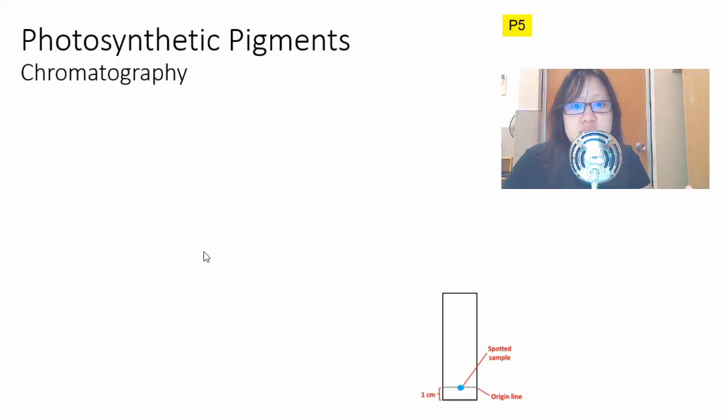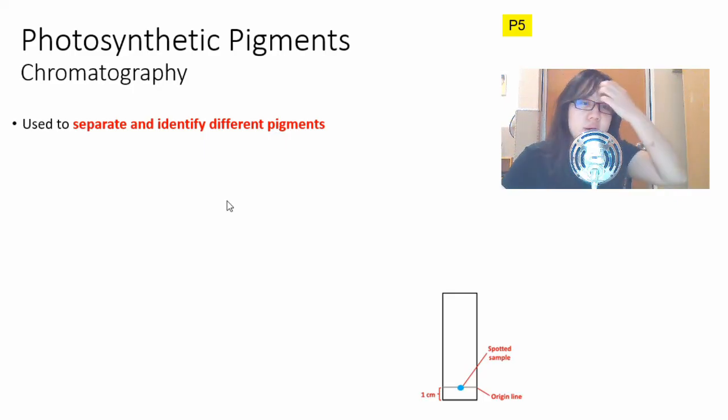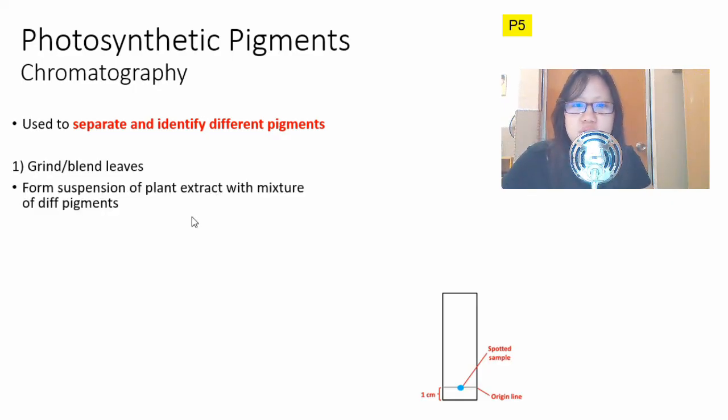Chromatography essentially is a technique used to separate and identify different pigments. We can do this in a lab. It's very fascinating and it has a different array of colors. The first step of this experiment is that you take the leaves and grind it with some stones, a little sand, and put some ethanol in order to lyse the cells. What you're left with is a suspension of plant extract, extracted stuff without the cells, with a mixture of different pigments.